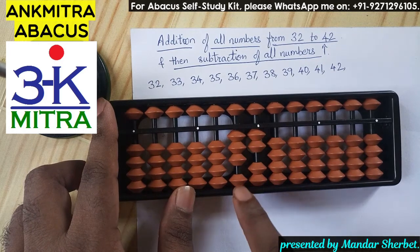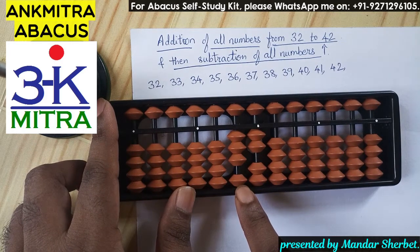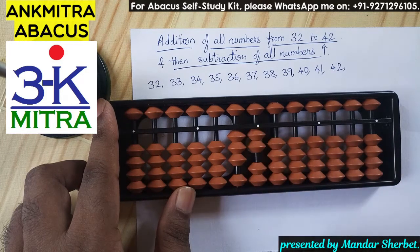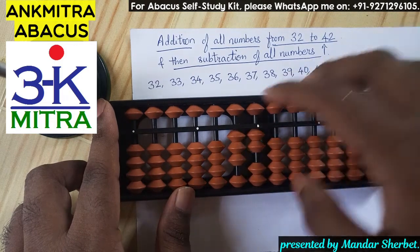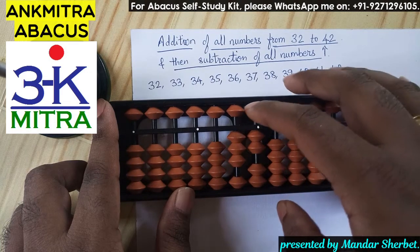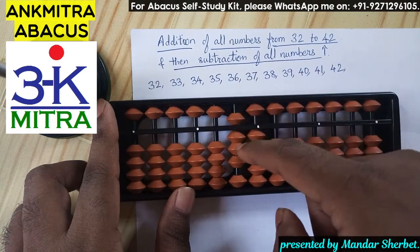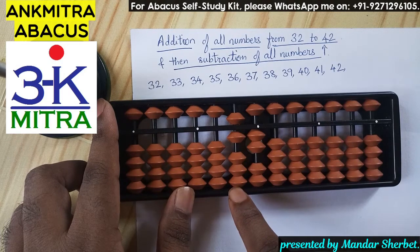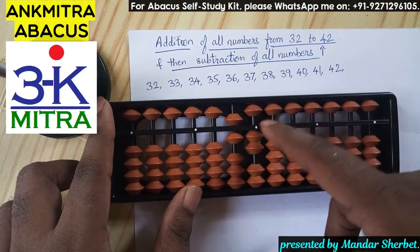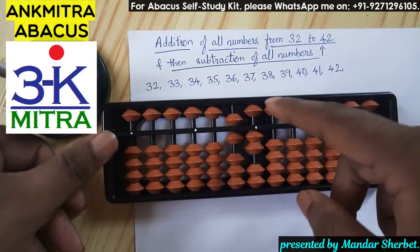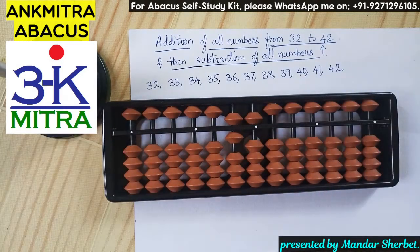Next number to be added is 33. For adding 3 on the tens place, I'll have to use the small friend formula since we don't have three beads available but we have five. Small friend formula of 3 is plus 5 minus 2, so I'll do plus 5 minus 2. Similarly, I'll add 3 on the units place using the same formula — plus 5 minus 2. Addition of 33 is done.